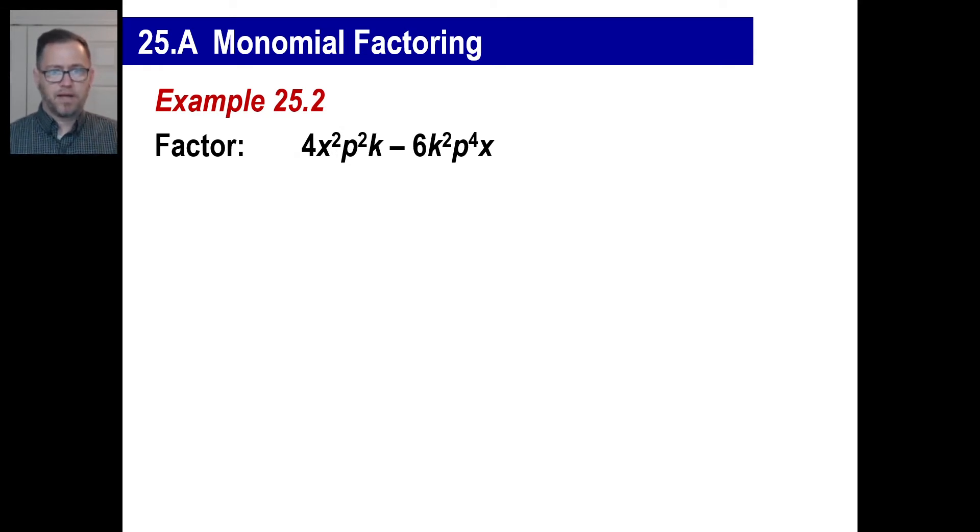Same thing here. Let's go ahead and factor this expression. And if you want to pause and copy, go ahead. Well, the first thing you do is take what number we can out of this. Four and six should be pretty easy for you. That's going to be two. And x squared and x to the first power. The rule is just pick the one that is the lesser or least exponent. So this is x to the first power. So that's what we'll factor out. We have p squared and then p to the fourth. We'll pick p to the second. Then k and k squared. Of course, we'll just pick a k.